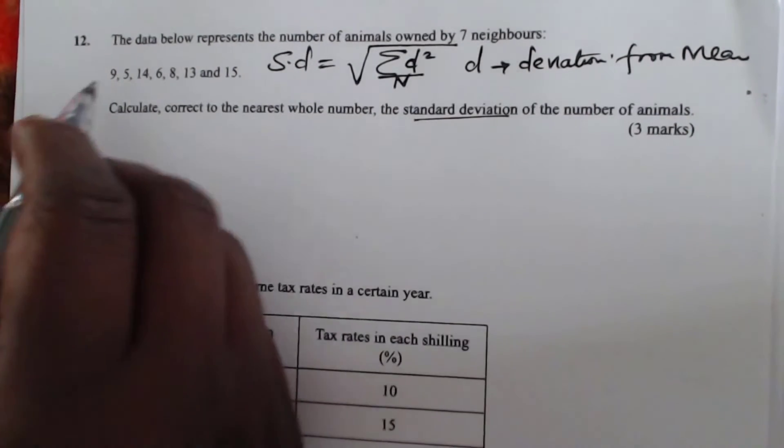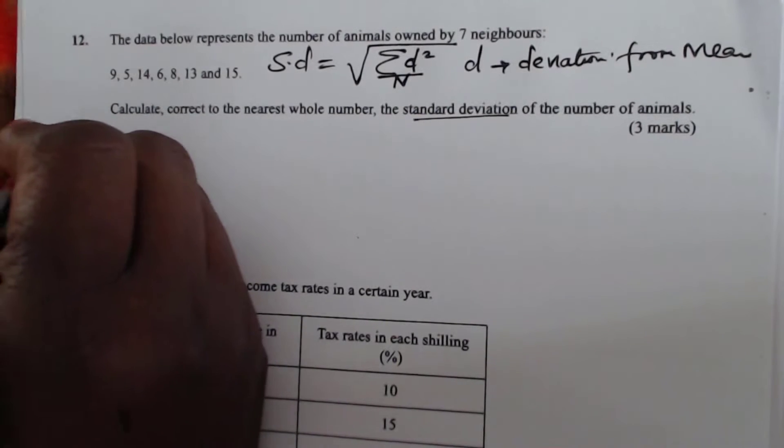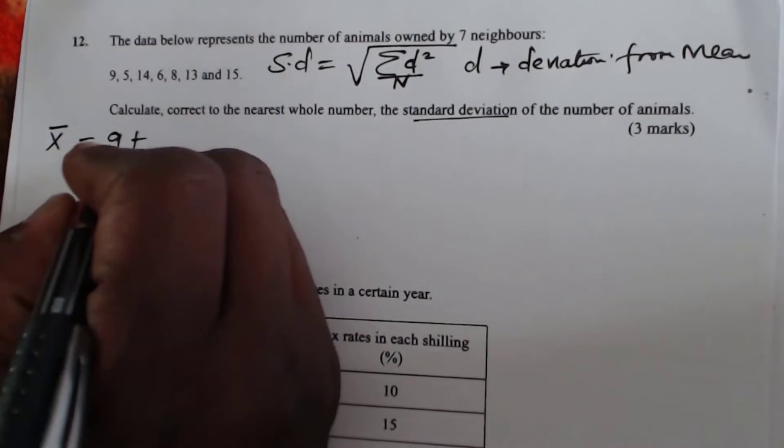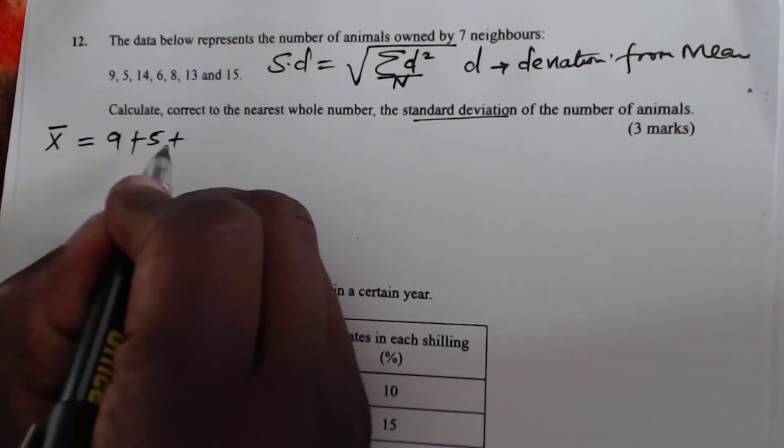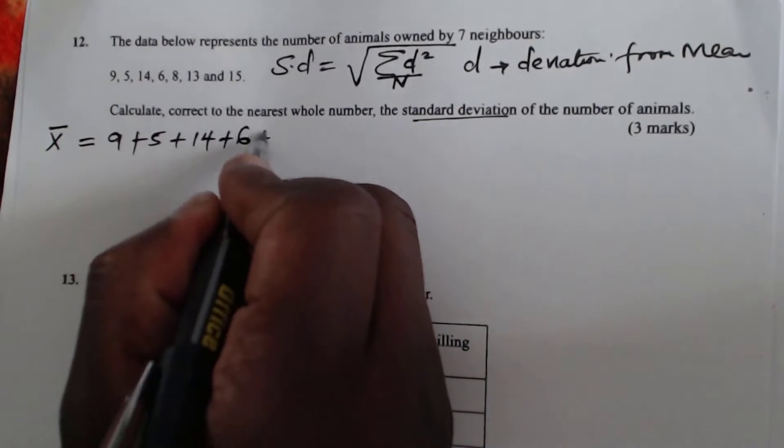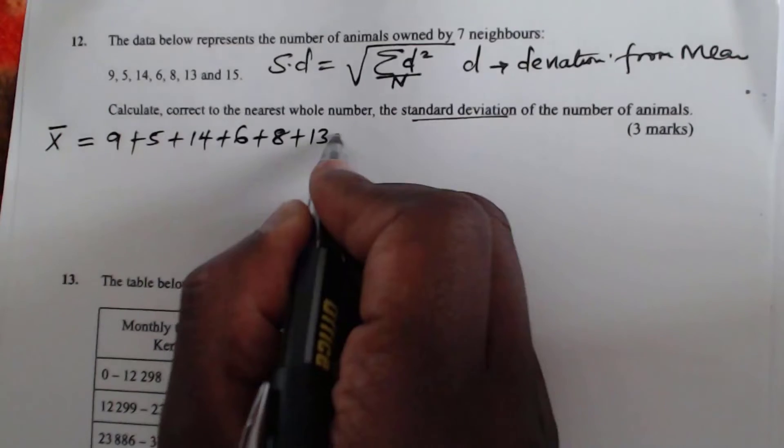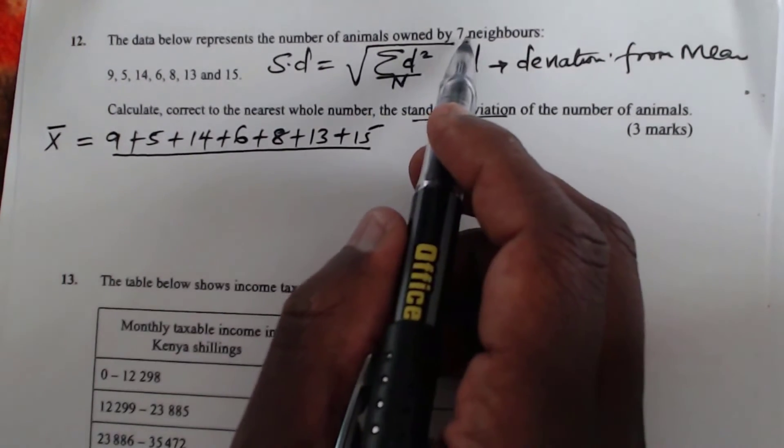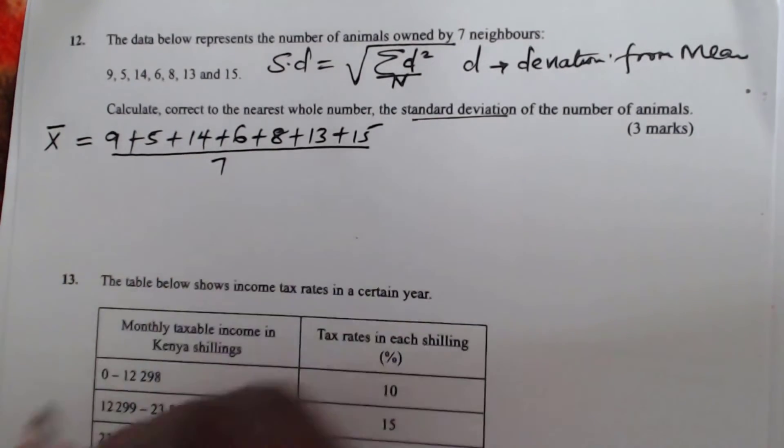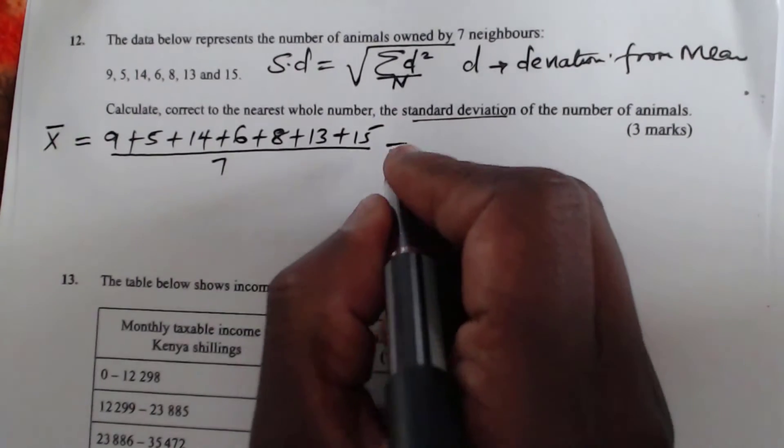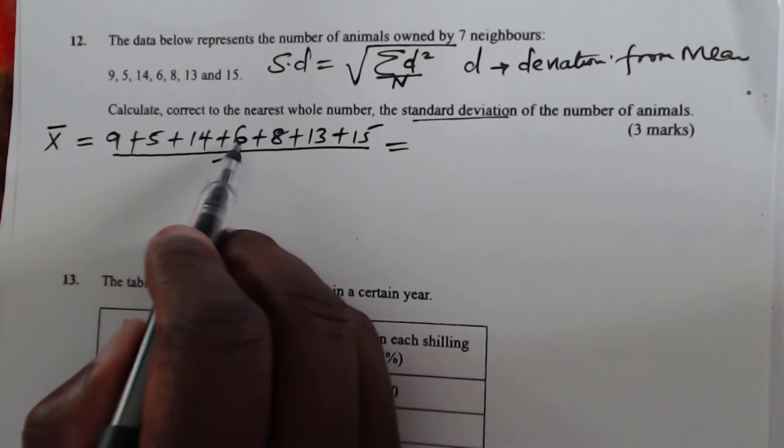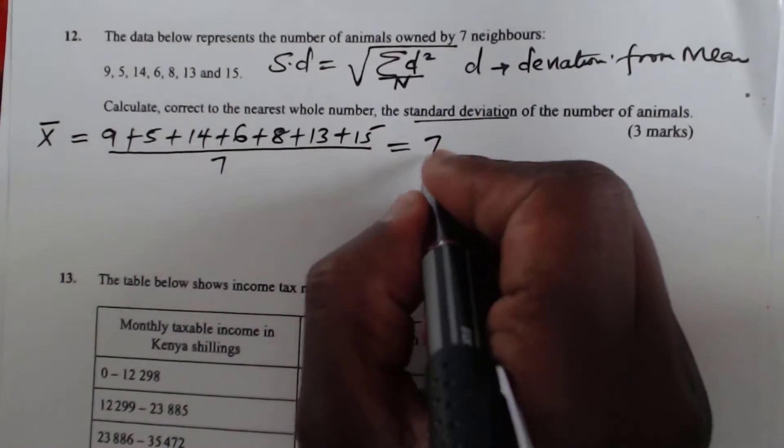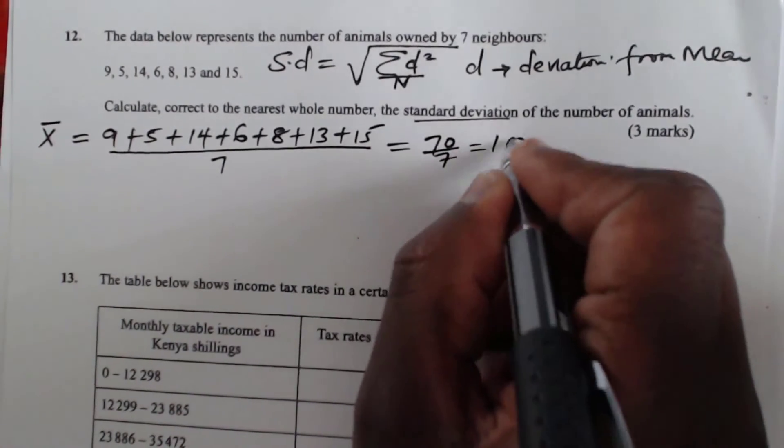How do we get deviation from the mean? We must calculate the mean of this data first. So mean is obtained by adding everything. This is 9 plus 5 plus 14 plus 6 plus 8 plus 13 plus 15. Everything we divide by 7, that is n. When you add this, you get 70 divided by 7, you get the mean as 10.